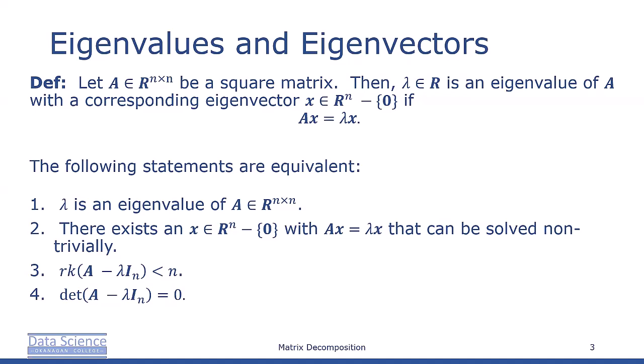From this definition of an eigenvalue and an eigenvector, we know the following statements are equivalent: lambda is an eigenvalue of A; there exists an x in n-dimensional space with Ax equals lambda x that can be solved non-trivially; the rank of A minus lambda I is less than n; and the determinant of A minus lambda I is equal to zero.